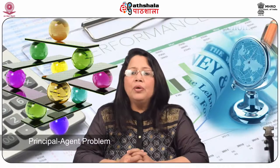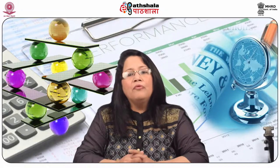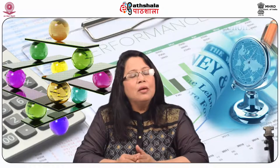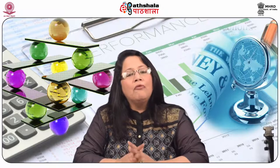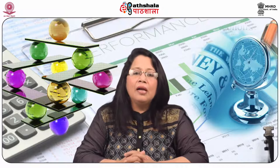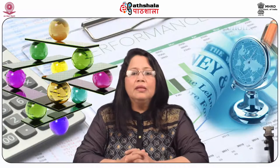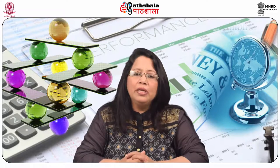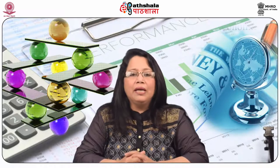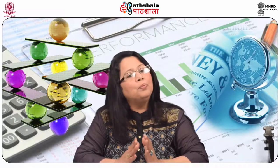The traditional microeconomic theory of firm behavior considers profit maximization to be the sole goal of a firm. It is considered that though a firm can face alternate markets — that is perfect competition, monopolistic competition, oligopoly, or monopoly — but in every case, the owners will seek to maximize profits only.